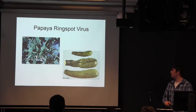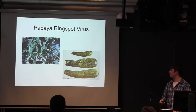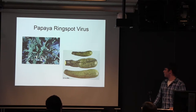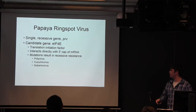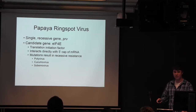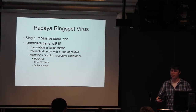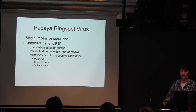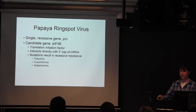I'm going to zoom in and talk about just one of these viruses: papaya ring spot virus. This is a devastating disease — it causes terrible fruit deformation, the plants are stunted, and nobody wants to buy this produce. I'm focusing on this one because it's unique in that resistance has been described by a single recessive gene. My thought is that the most likely candidate gene is EIF4E, a translation initiation factor that interacts directly with the 5' cap of mRNA. It's been shown in other species that mutations in this gene result in recessive resistance to mostly potyviruses.